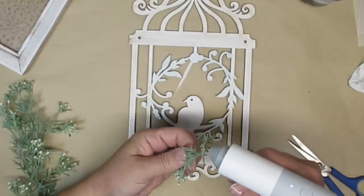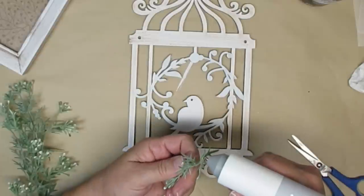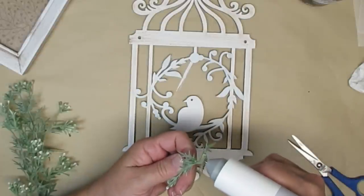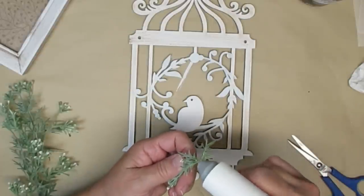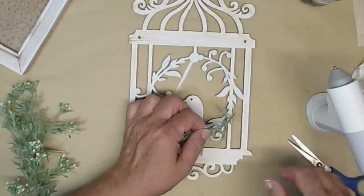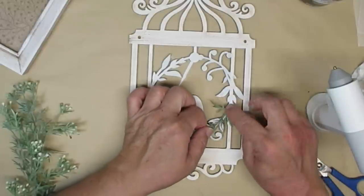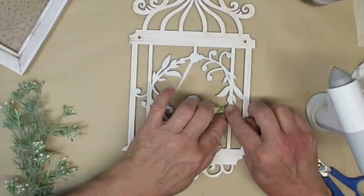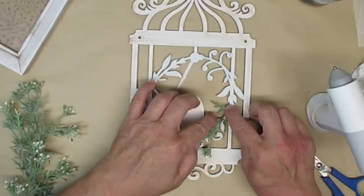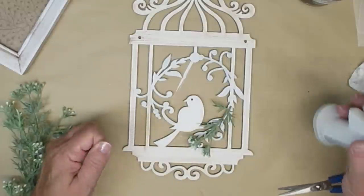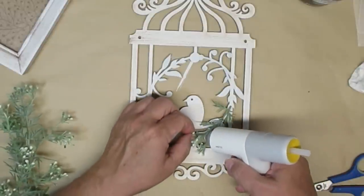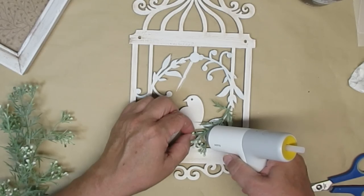I decided to hot glue some of this dusty miller onto the area where the greenery is. So all of that vine cutout I decided to fill that up with some of this beautiful greenery. I love the color of this, it reminds me of a little mini lamb's ear, and I'm again using my Hoto little mini hot glue gun to attach everything in place.